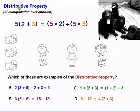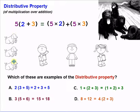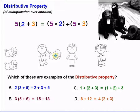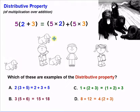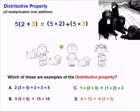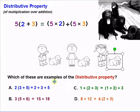You might guess from the name that the distributive property has something to do with things being distributed. Here we have some puppies. Let's say we had three puppies and we wanted to distribute those three puppies to each of three children. We take one puppy and give it to this kid, one puppy and give it to this kid, and one puppy and give it to this young lady. So now we have distributed our three puppies to these different people.